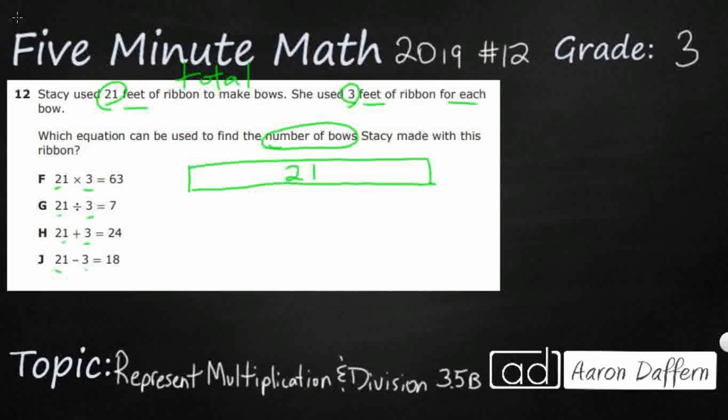And then she used 3 feet of ribbon for each bow. And we need to know how many bows we can make. So it looks like what we're going to do is we're going to take sets of 3, and then we're just going to try to figure out, how many bows can she make? How many sets of 3 can she get out of there?